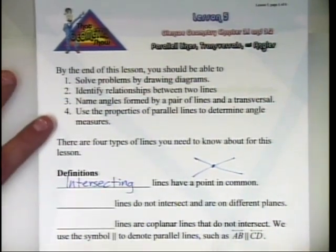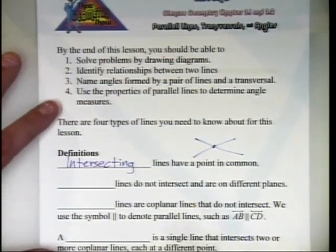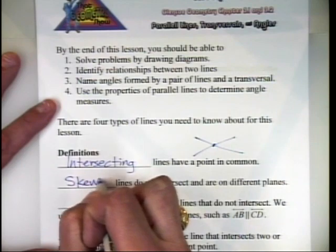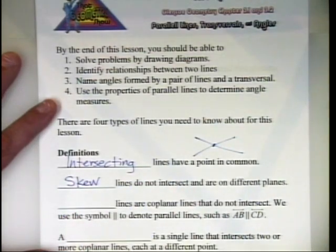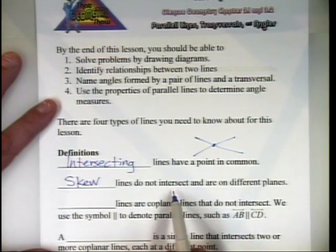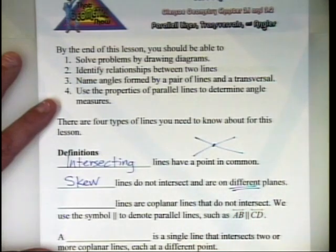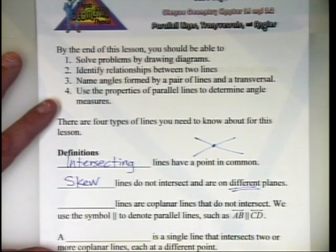Another type of lines we're going to look at are called skew lines. These are lines that do not intersect, and they're also on different planes. A good example would be a highway and the highway overpass — they're going in different directions, on different planes, and they never intersect.